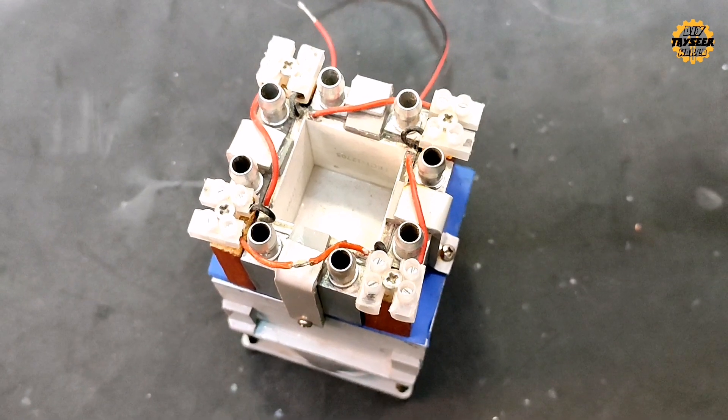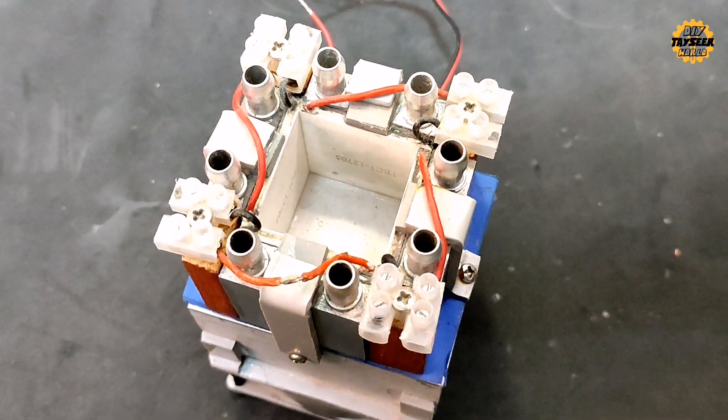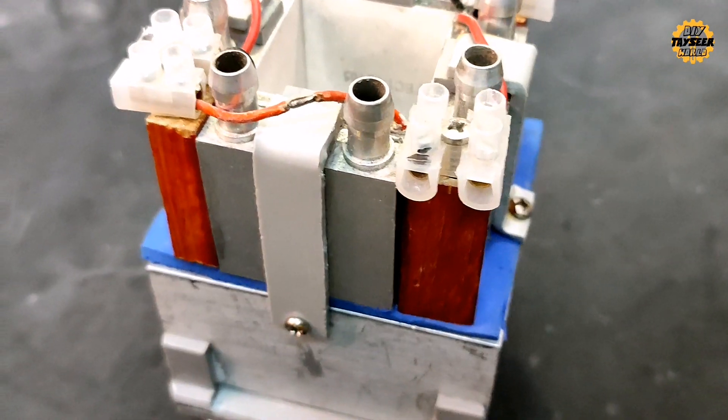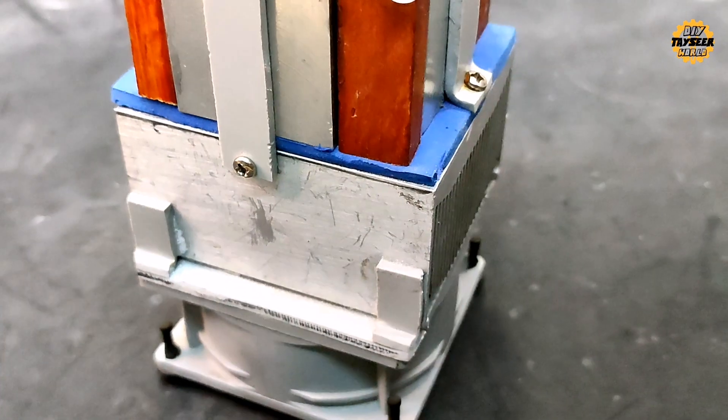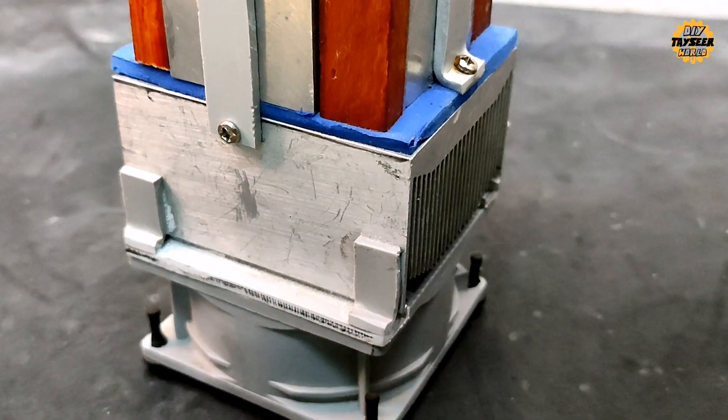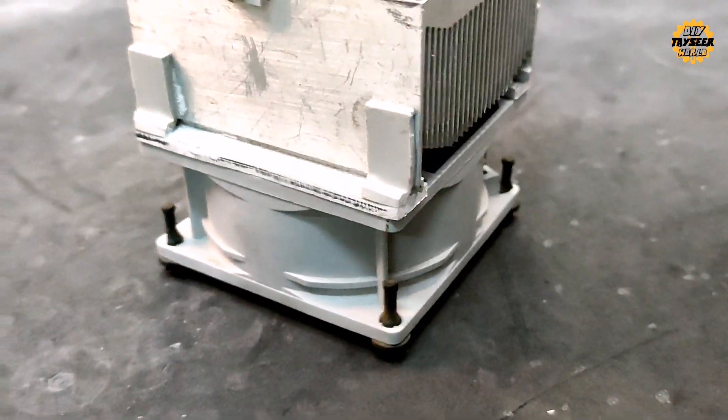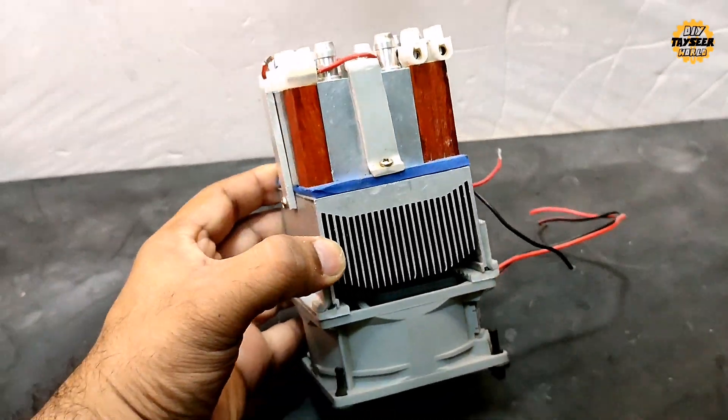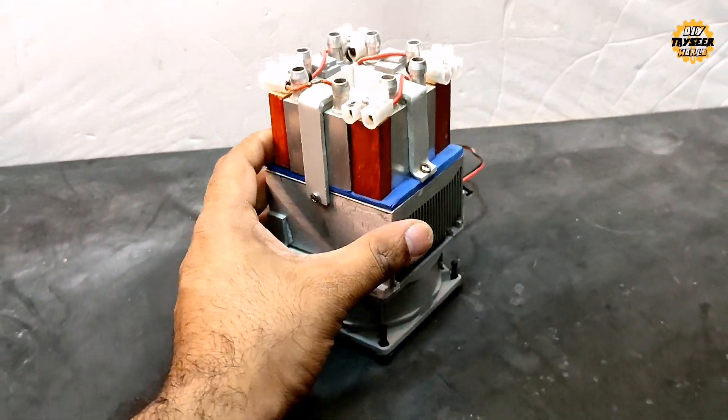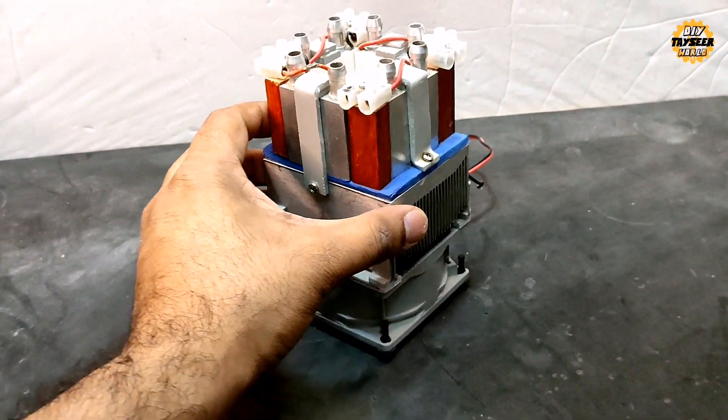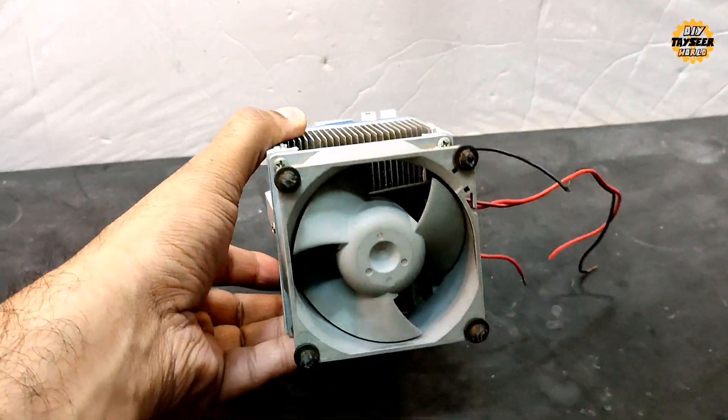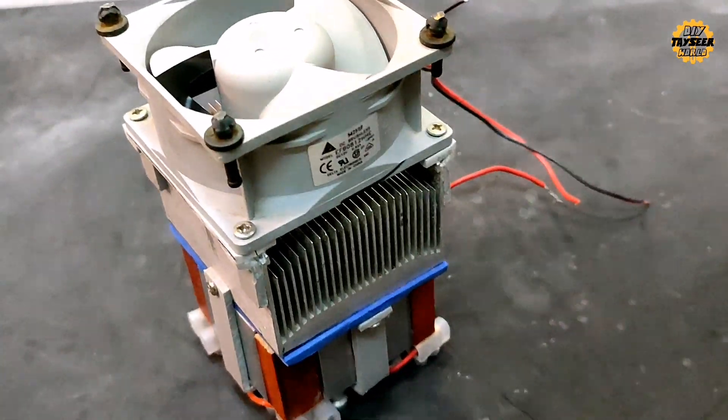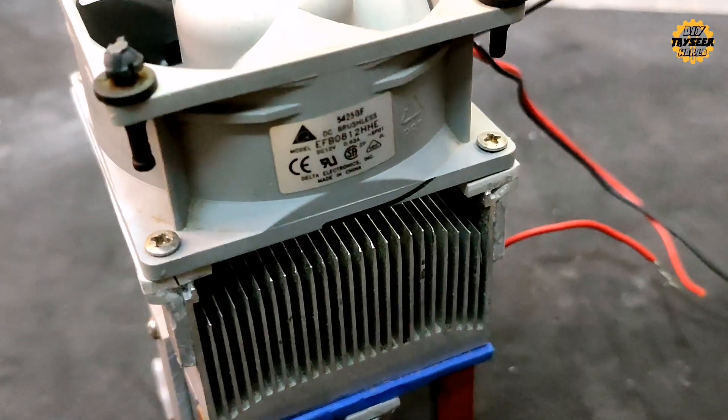In this case, there are 5 peltier units, TEC 12705. There are 4 water cooling blocks. And under the 5th peltier, this is an aluminum heat sink and cooling fan. The size of this device is about this, you can see it from my hands.